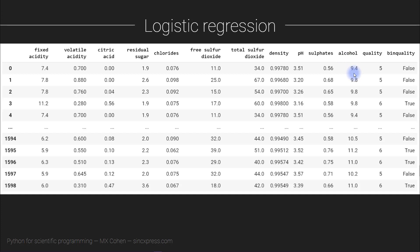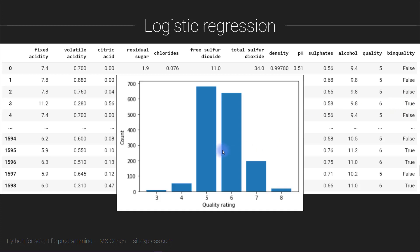To start, you want to binarize the quality variable. Quality ranged from three through eight, and we want a new column called 'bin_quality' for binarized quality. It takes only false or true: false if the value is below the mean of quality ratings, and true if it's above the mean. The mean is going to be somewhere around 5.5, certainly between 5 and 6.